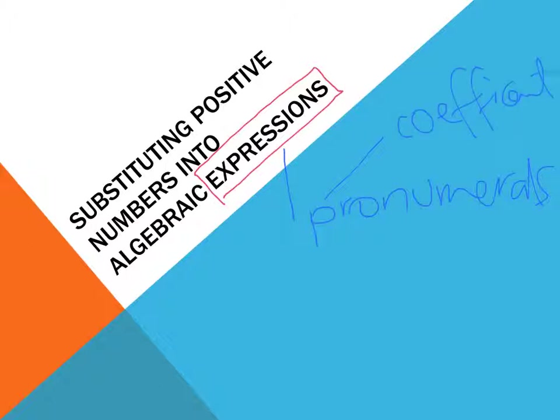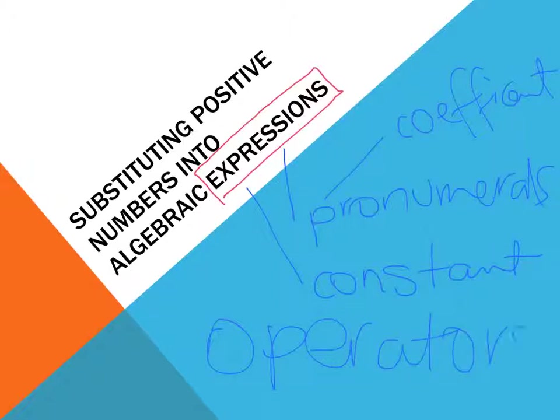They may have constants, so actual numbers like 4, 8, 7, things that don't change, and they're all separated by operators - all separated by pluses and minuses or divisions or sometimes multiplication.